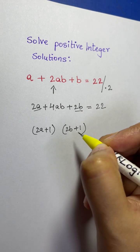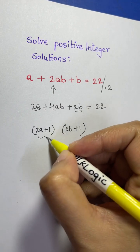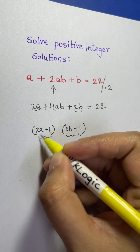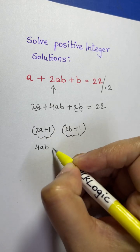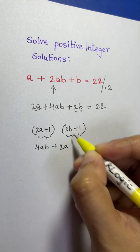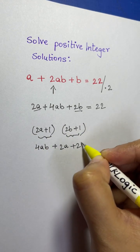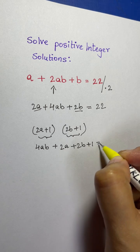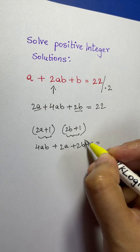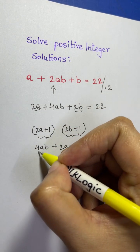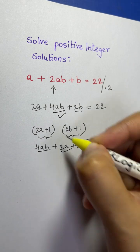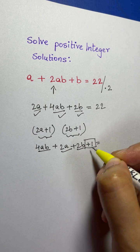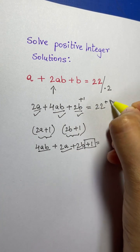Let me expand (2a + 1)(2b + 1) using the FOIL method: 2a × 2b = 4ab, plus 2a × 1 = 2a, plus 2b × 1 = 2b, plus 1 × 1 = 1. So expanding gives 4ab + 2a + 2b + 1. This reveals the missing number is +1. We have all the terms we need: 4ab, 2a, and 2b — the missing number we need to add to both sides is +1.